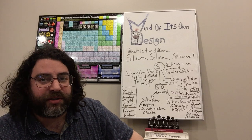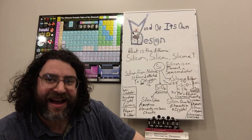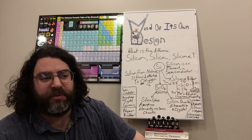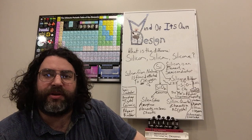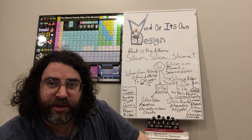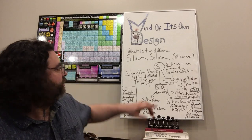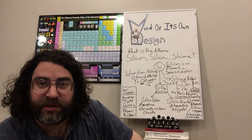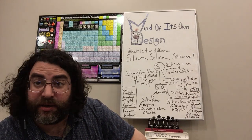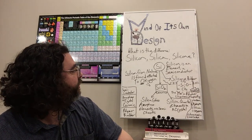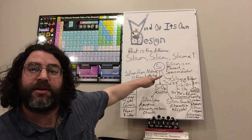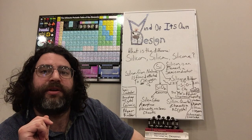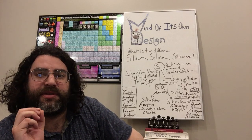A semiconductor doesn't have the high conductivity, electrical conductivity of a metal, but it doesn't totally stop it the same way that an electrical insulator would. Silicon dioxide is almost definitely an electrical insulator, but silicon metal, or metalloid, is a semiconductor.